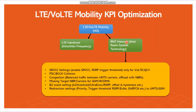For IRAT handover — inter radio access technology, meaning handover between different technologies like 4G to 3G or 4G to 2G — we have to check the SRVCC setting. If it is not enabled, we have to enable SRVCC. Second is PSC collision: in UMTS, if two or more sites have the same PSC, we have to re-plan that PSC for successful handover. Similarly for BCC in 2G, we have to modify the BCC of a particular cell if there is a BCC collision.